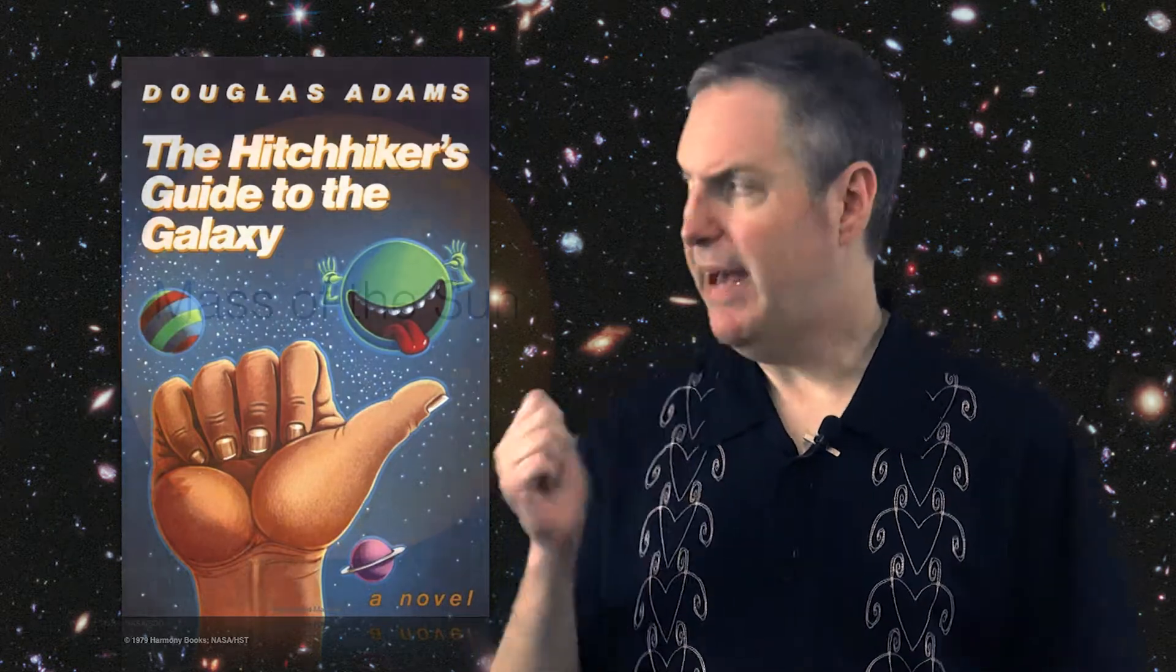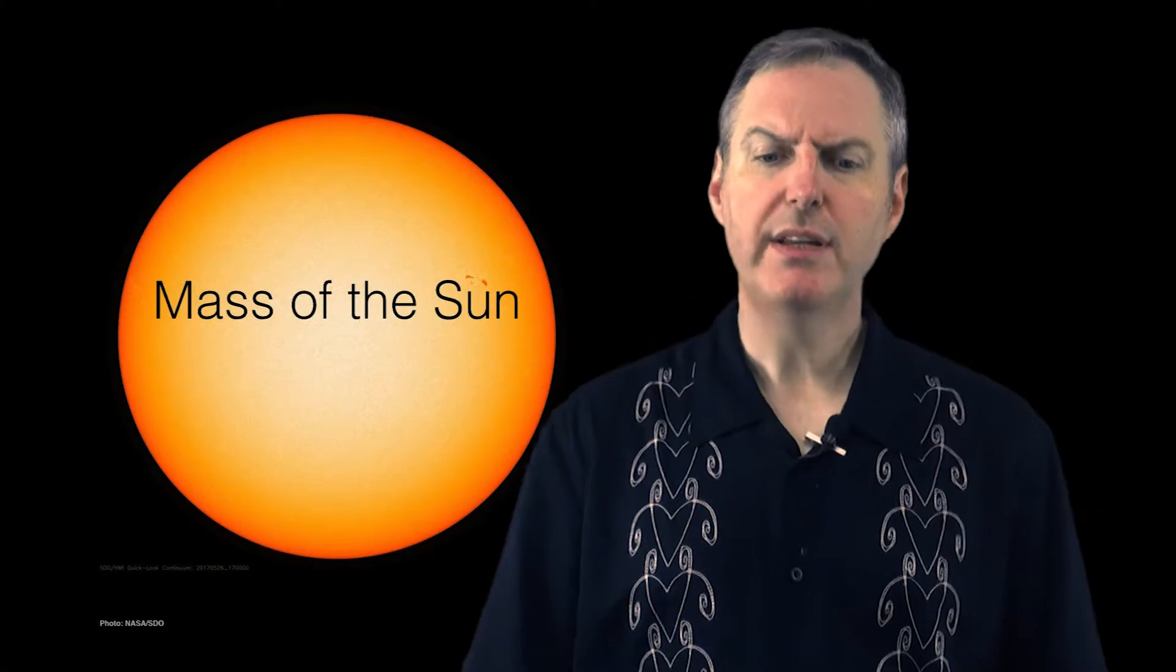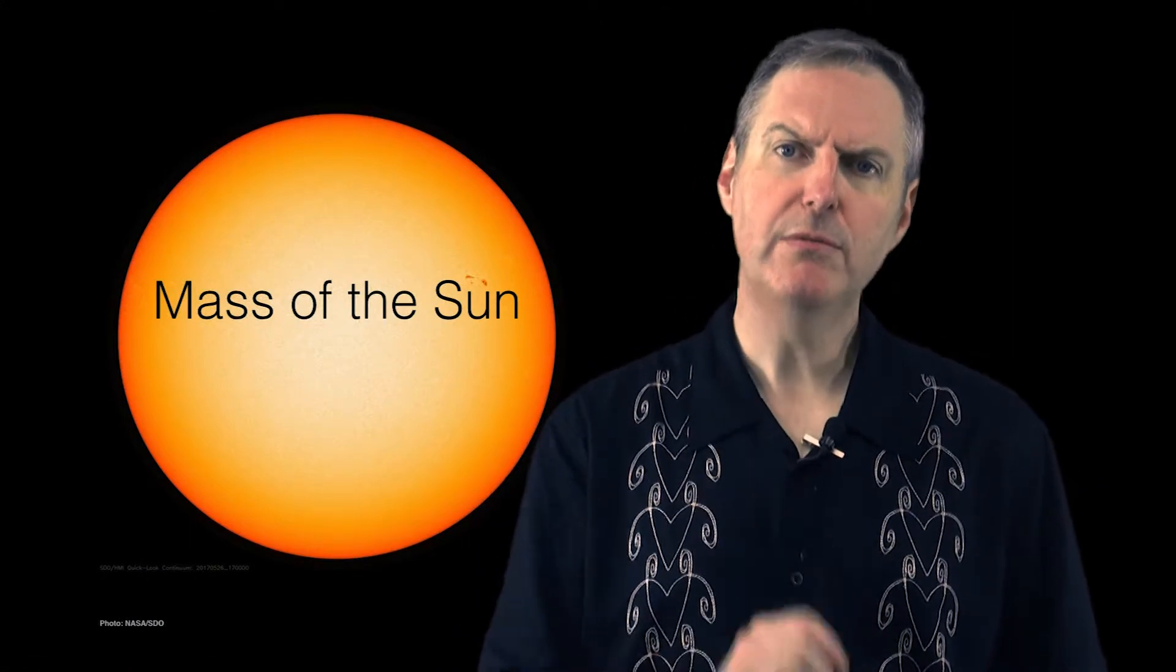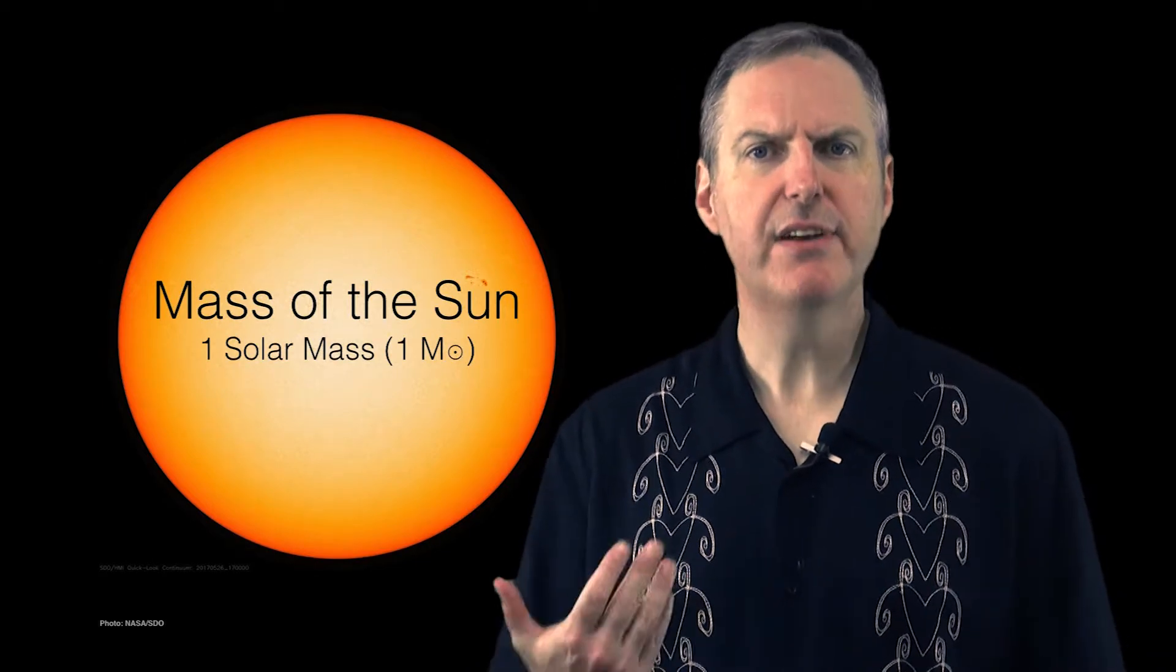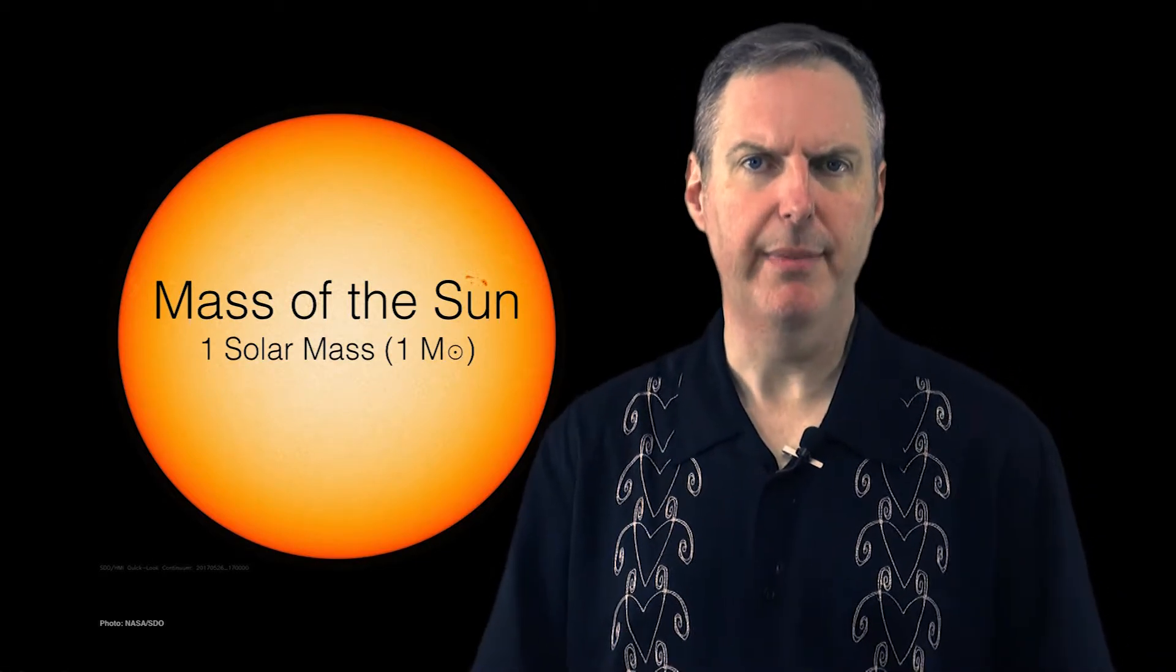Let's take for example the mass of the sun. Well, in astronomy, we often refer to the mass of the sun as having just one solar mass. Now this is a very useful way of describing the mass of the sun in relationship to other stars.